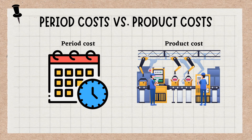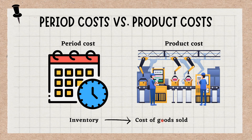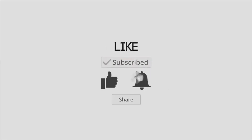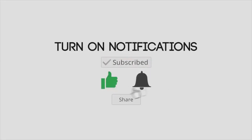A product cost is initially recorded as inventory, which is stated on the balance sheet. Once the inventory is sold or otherwise disposed of, it is charged to the cost of goods sold on the income statement. A period cost is charged to expense on the income statement as soon as it is incurred.